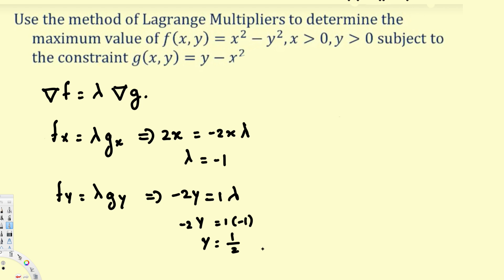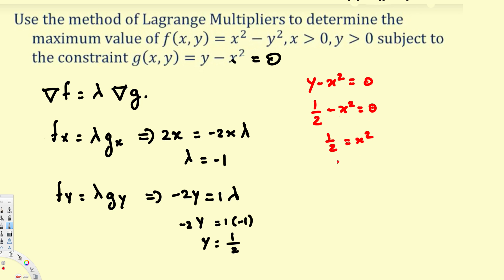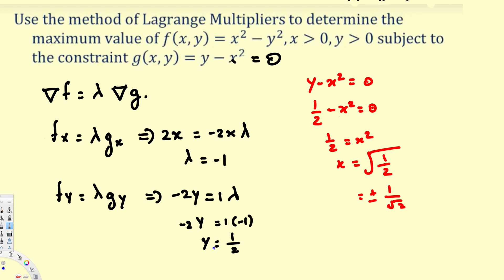Now we know y but not x. We use the constraint equation, set equal to 0, to solve for x. The constraint gives y minus x squared equals 0. Substituting y equals 1/2: 1/2 minus x squared equals 0, so x squared equals 1/2, and x equals plus or minus 1 over root 2. This gives us two points: (1/√2, 1/2) and (−1/√2, 1/2).